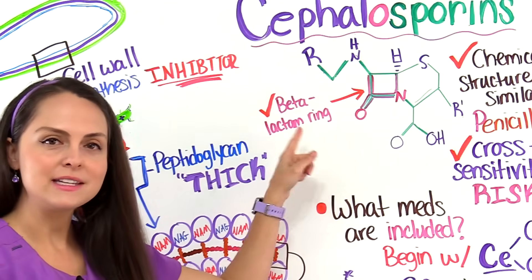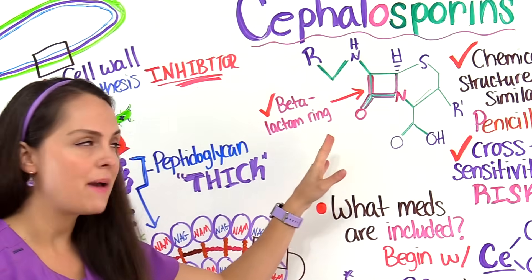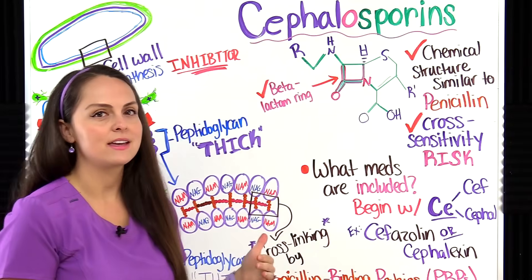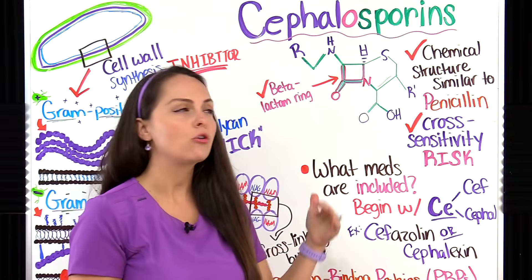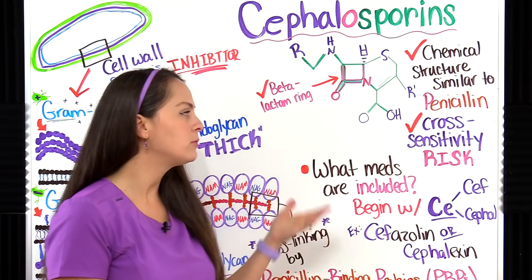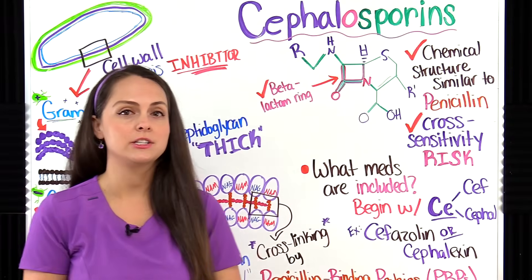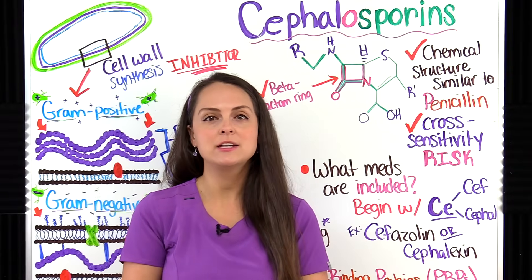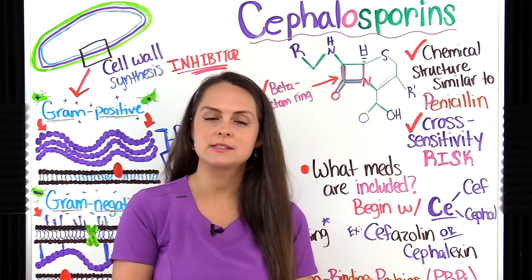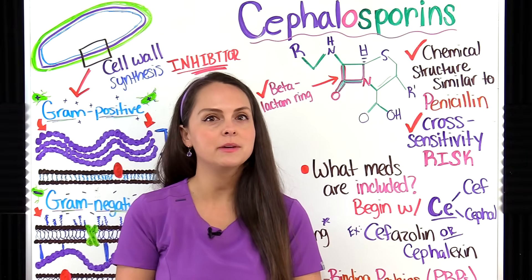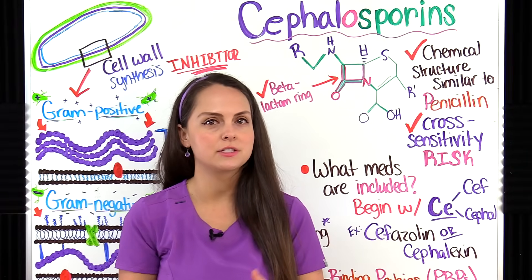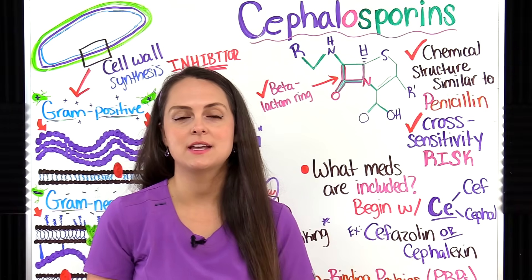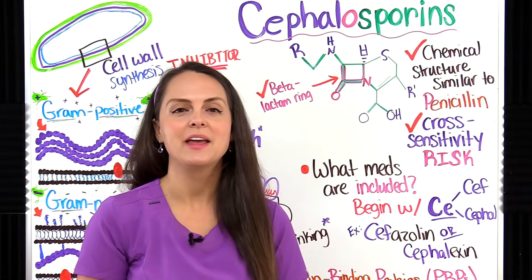They both contain this beta-lactam ring. Because of this, there is a cross-sensitivity risk for your patient if they're allergic to penicillin, because patients who are allergic to penicillin can potentially be allergic to cephalosporins, especially those older generations of cephalosporins.